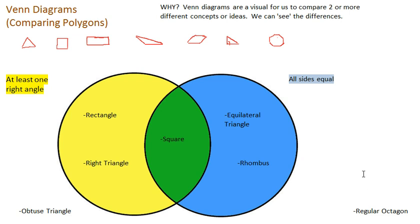Last but not least, the regular octagon. Does it have at least one right angle? No, all the angles are actually obtuse. Are all sides equal? Well, yeah, because it's in the name actually, the regular octagon. A regular octagon has to have all sides equal because it's regular. And so we'll place it there.